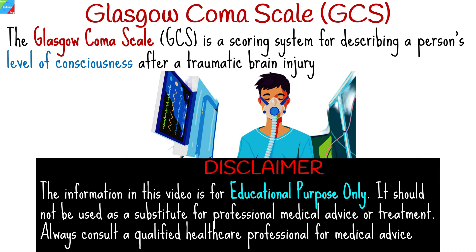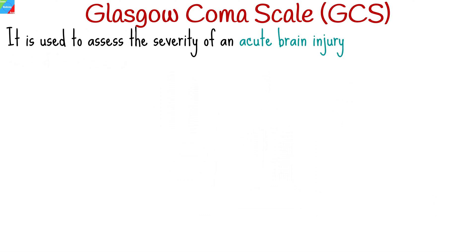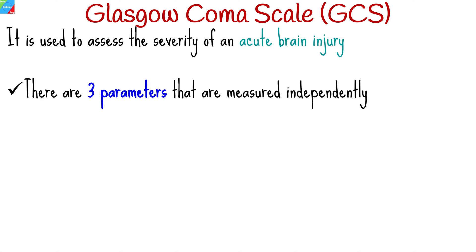The Glasgow Coma Scale is the most commonly used scoring system for describing a person's level of consciousness after a traumatic brain injury. Essentially, it is used to assess the severity of an acute brain injury. The test is simple to perform, reliable, and correlates well with the outcome of severe brain injury.